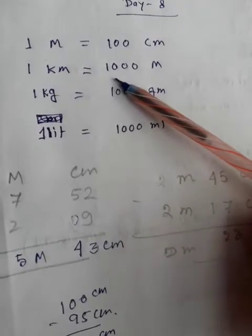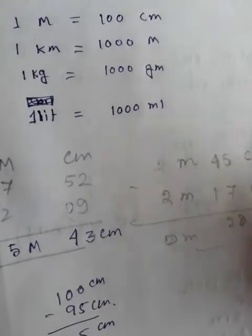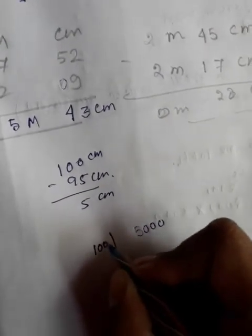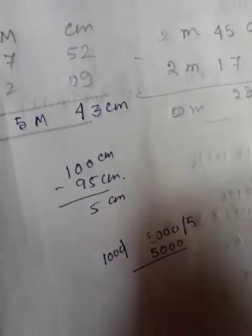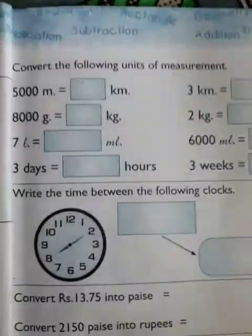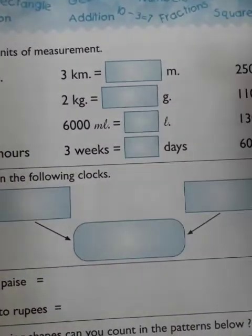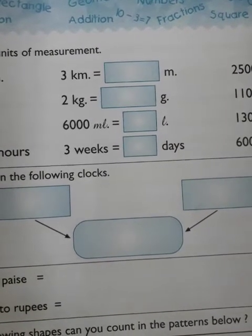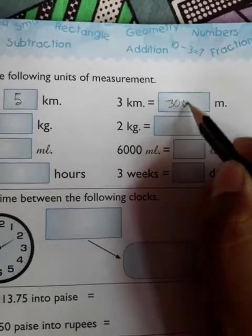5,000 meters divided by 1,000 gives 5 kilometers. So 5,000 meters equals 5 kilometers. Next: 3 kilometers equals how many meters? Since 1 kilometer is 1,000 meters, 3 kilometers equals 3,000 meters.